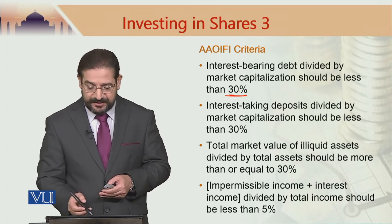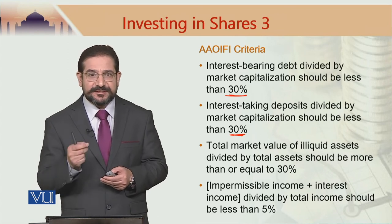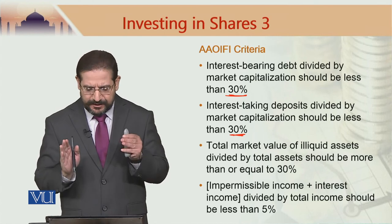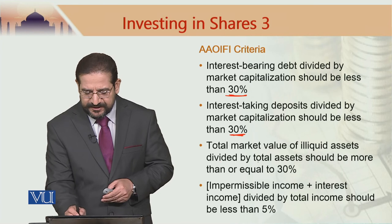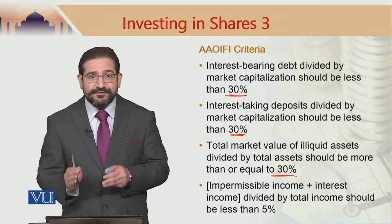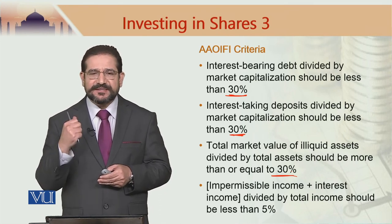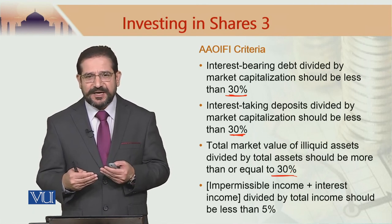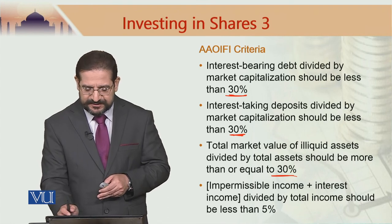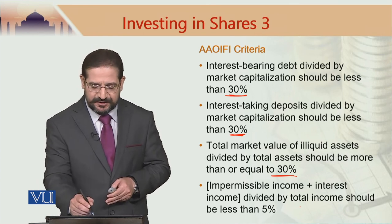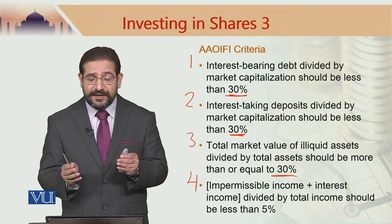Interest-taking deposits divided by market capitalization should be less than 30% — they are not talking about cash here. Remember, in other methodologies it is cash plus interest-bearing securities. Total market value of illiquid assets divided by total assets should be more than 30% — this was not there previously. AOIFE criteria has revised it in light of what Pakistanis have been doing in Karachi, so Pakistani thinking has started influencing other methodologies as well. Impermissible income plus interest income divided by total income should be less than 5%. All these methodologies are relevant and compliant and good on their own.